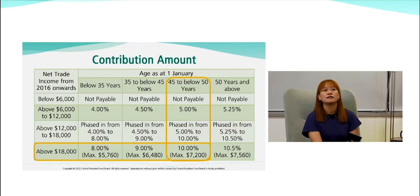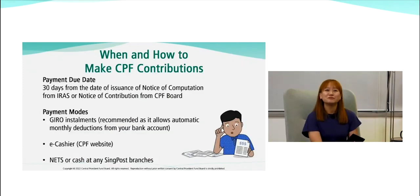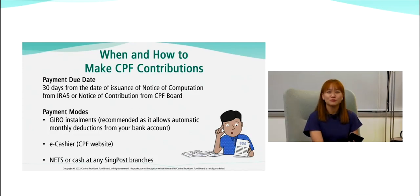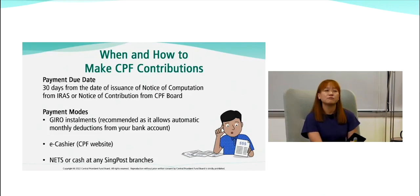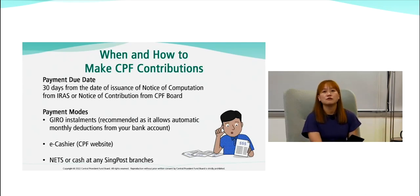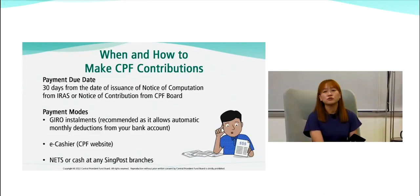When and how do you make CPF contributions? The payment due date is 30 days from the date of issuance of the Notice of Computation from IRAS, or from the notice of contribution if you declare to CPF Board. For payment modes, we recommend GIRO installments — it allows automatic monthly deductions from your bank account, so you don't have to make a lump sum payment.